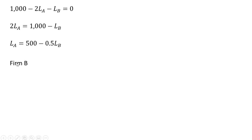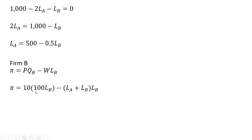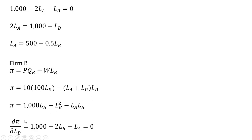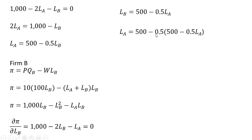Now we're going to do basically the same thing for firm B. We're going to maximize firm B's profit, making the substitutions, simplifying, taking a partial derivative of the profit function with respect to firm B's labor, setting that result equal to 0, and now solving for L subscript B.